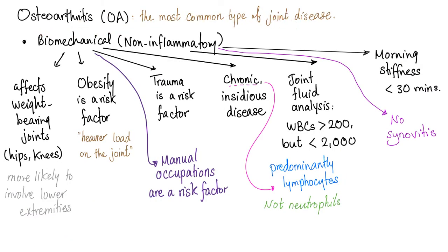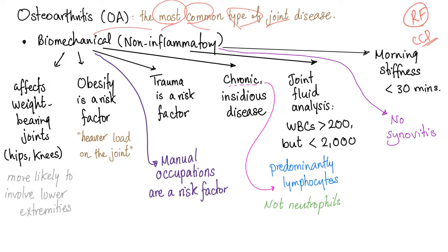Osteoarthritis is the most common type of joint disease. Why? Some of us may have positive rheumatoid factors, but most don't. Some may have anti-CCP antibodies, but most don't. But every single one of us will have wear and tear — it's called physics. Nothing mechanical doesn't wear out. Since it's biomechanical, it affects the weight-bearing joints — hips and knees. Osteoarthritis is more likely in the lower extremities than the upper extremities, and now we know why.